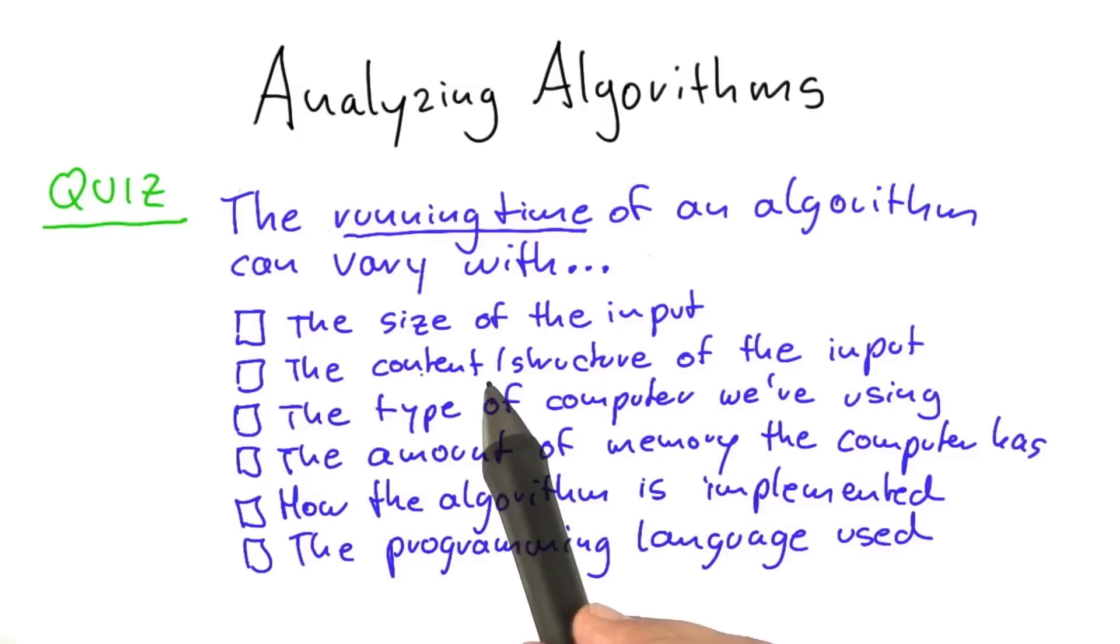Secondly, the content or structure of the input. Third, the type of computer that we're using for the algorithm.